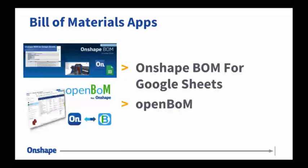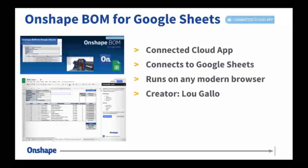The first is very much a simple spreadsheet — Onshape BOM for Google Sheets, a tool written by Lou Gallo that lets you pull all that data into a simple Google Sheet. If you're looking for relatively simple functionality with Google Sheets, that's a good tool. It's not an integrated app inside Onshape — it connects to Google Sheets as a separate tab. Segueing into OpenBOM, it is an integrated app, so you can create a bill of materials right inside your Onshape document.